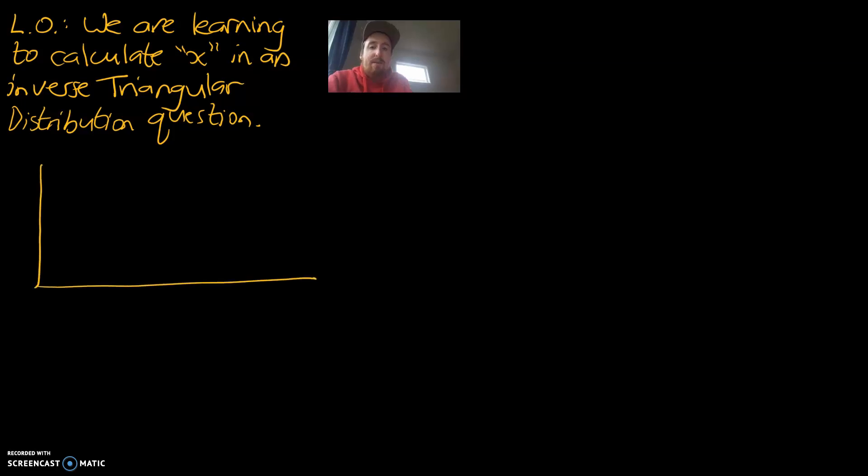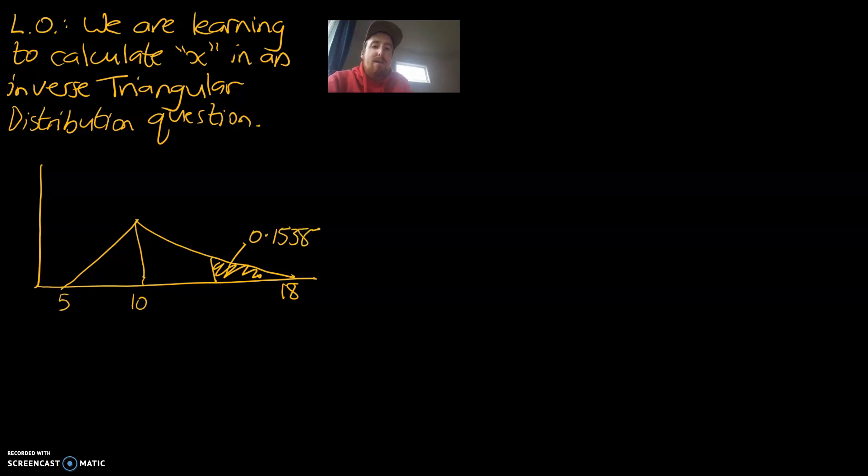So, our graph has a minimum of 5, a peak of 10, and a maximum of 18. And we know this area here has a probability of 0.15385. And we've been asked, what is the x-value that relates to that triangle and that probability? We're trying to find that x there.